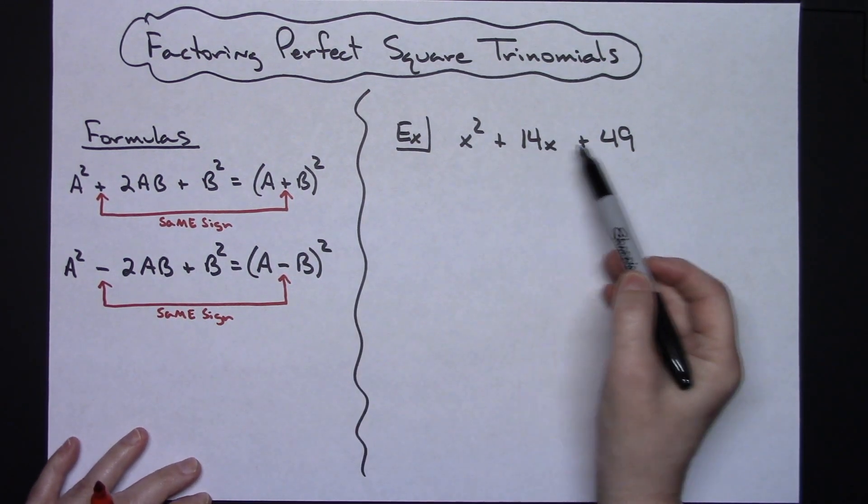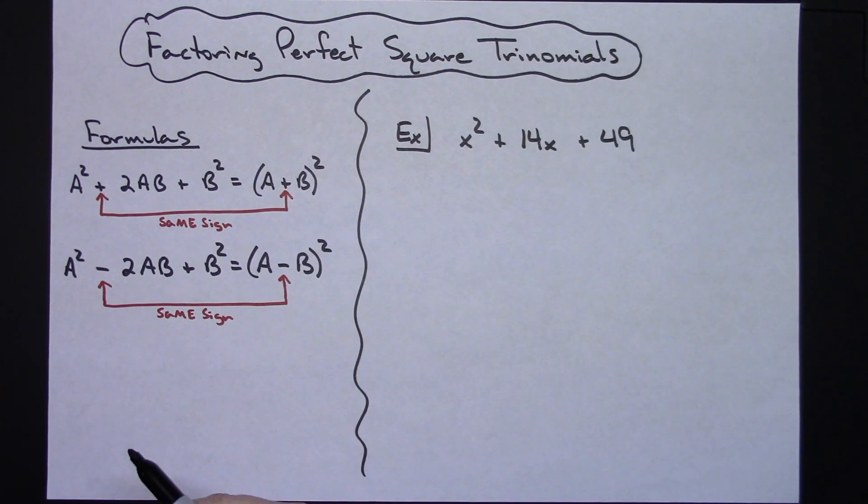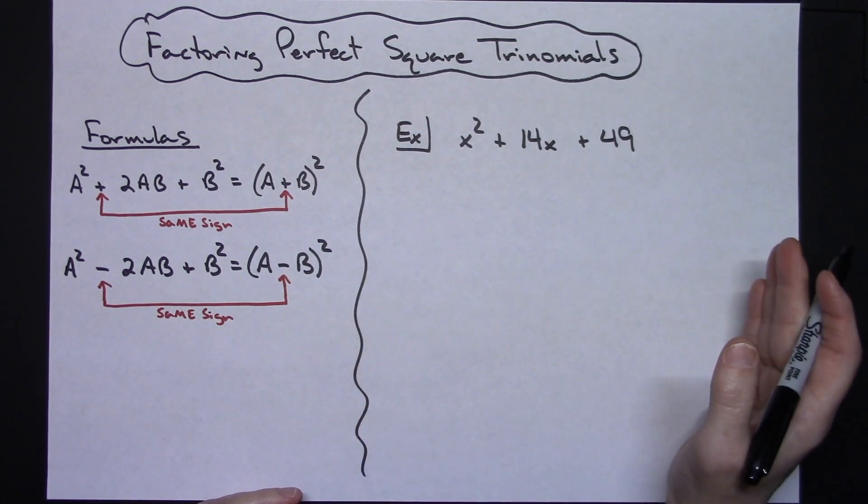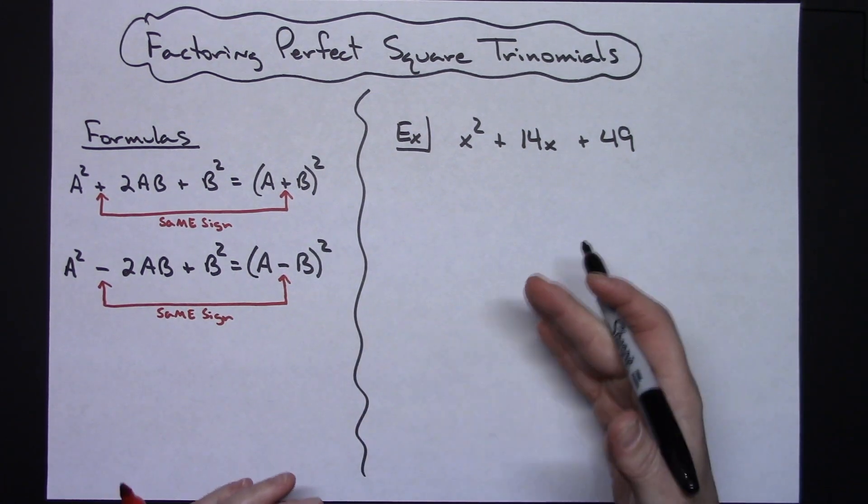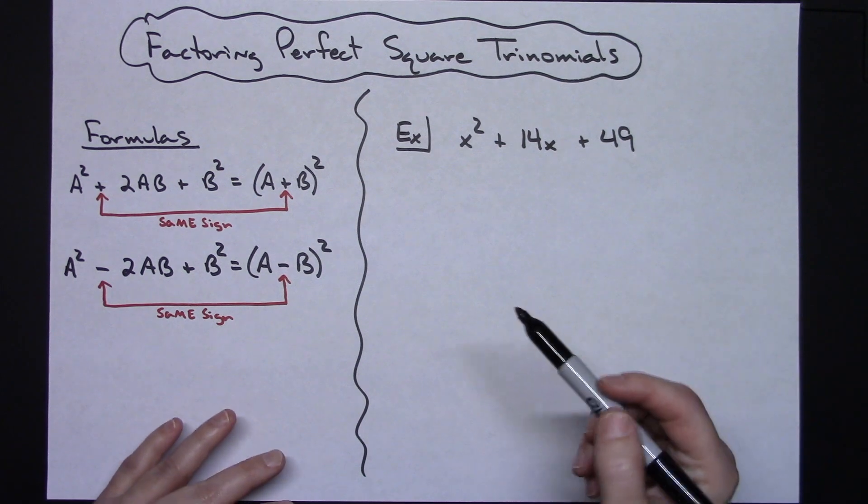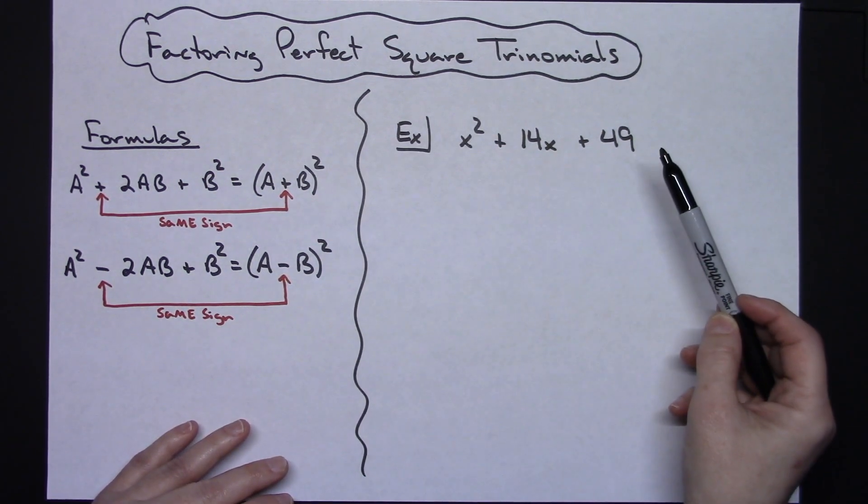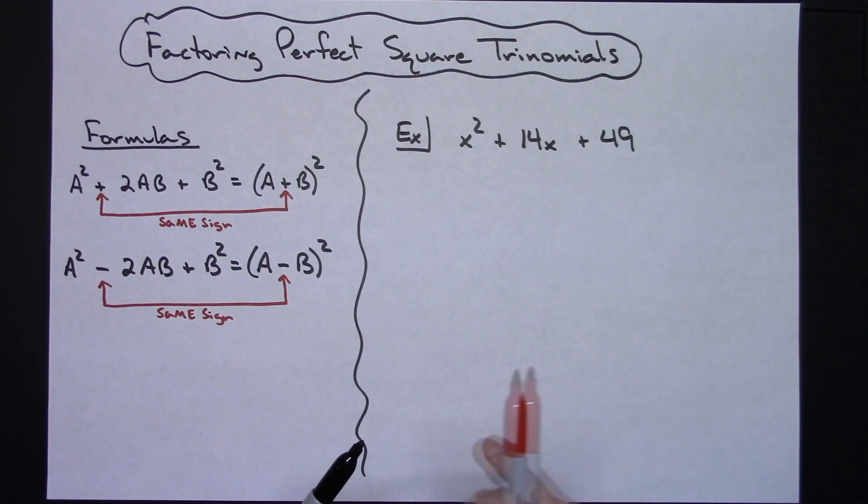Now each one of these, technically this is a trinomial, and if you don't recognize that it is a perfect square trinomial you could factor it with guess and check, you could factor it with slide and divide, there's a variety of other methods that you could use and you're still going to get the same answer. It's just if you can recognize that it is a perfect square trinomial, then it could be a little bit faster for you.